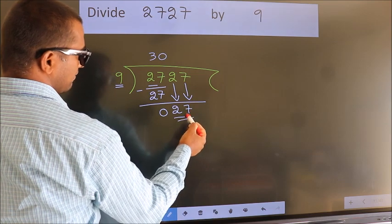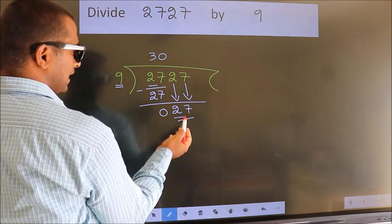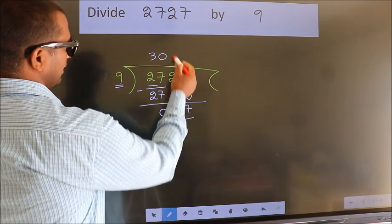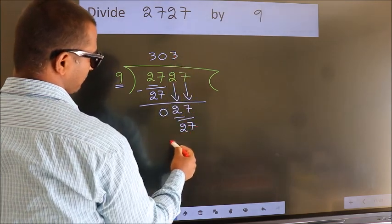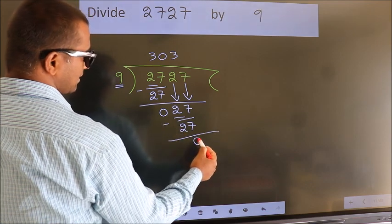So, 27. When do we get 27 in the 9 table? 9 threes, 27. Now we subtract. We get 0.